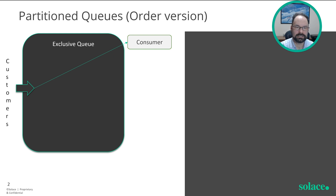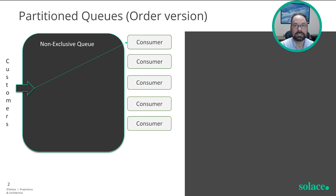that one consumer application can't deal with the volume. You need to horizontally scale it, which is the whole point of a microservice deployment, right? Now, you could use Solace non-exclusive queues. Non-exclusive queues allow multiple consumers to connect to the same named queue, and it load balances the incoming events amongst those consumers.